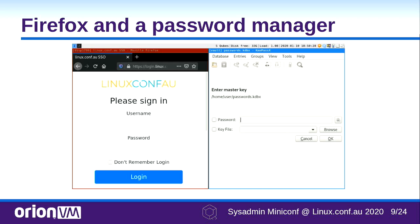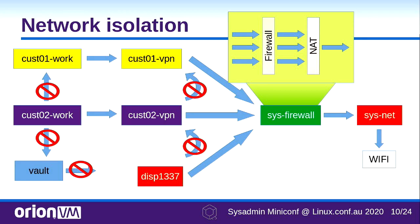It also has i3 support, so we generally use i3 — it works very well. One of the major wins you get from Qubes is very good network isolation. Who here has had contracting work with multiple customers and multiple VPNs, trying to deal with all of that?